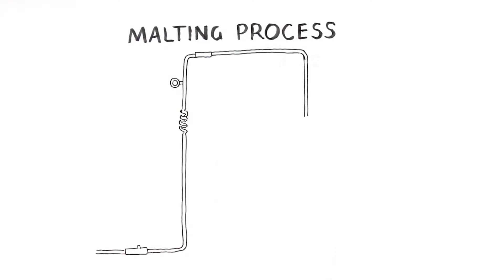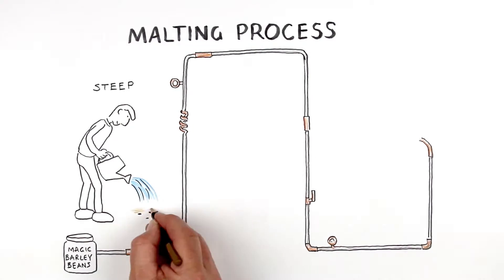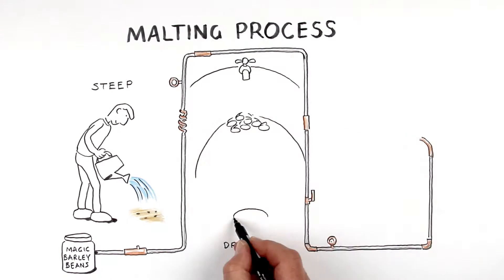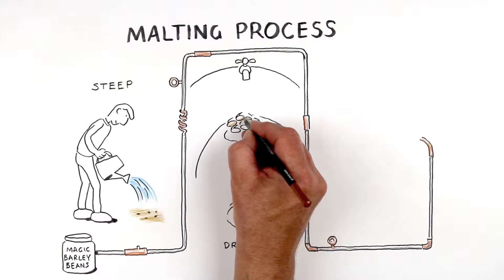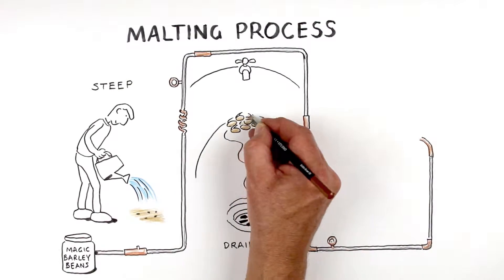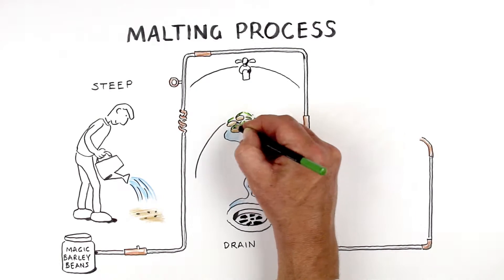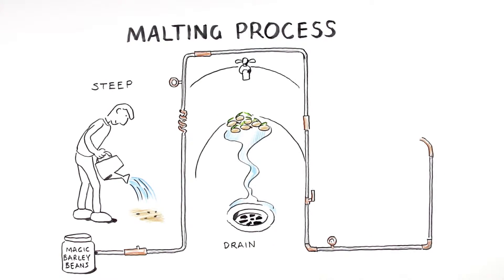There are three stages in the malting process. First we steep the barley by soaking it in water for a day or so. This makes the barley think that it's ready to grow. Then we drain the water and let it germinate for up to five days. This is critical because this is when the barley starts generating the special enzymes that convert starches into sugars. We'll talk about this later.